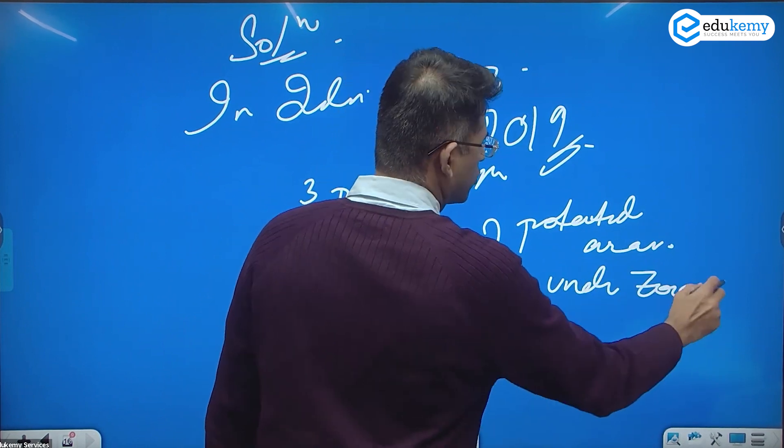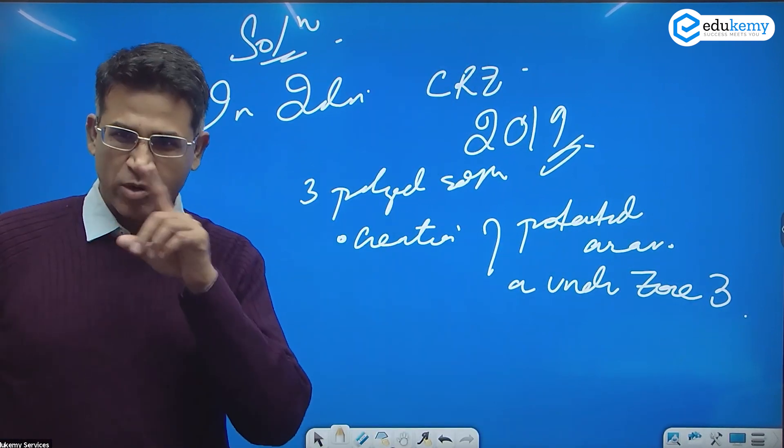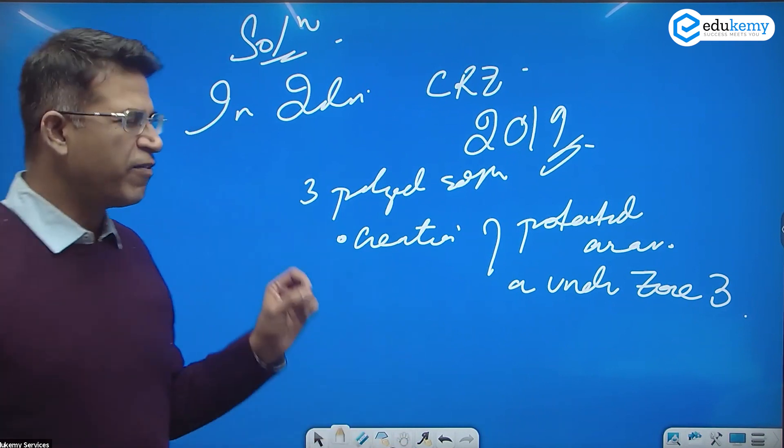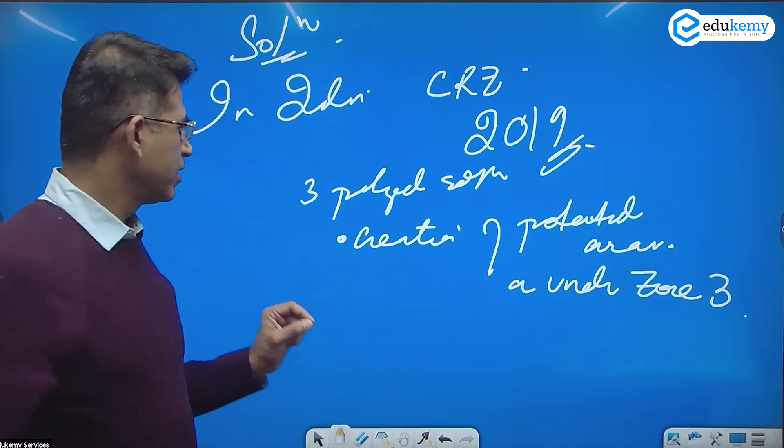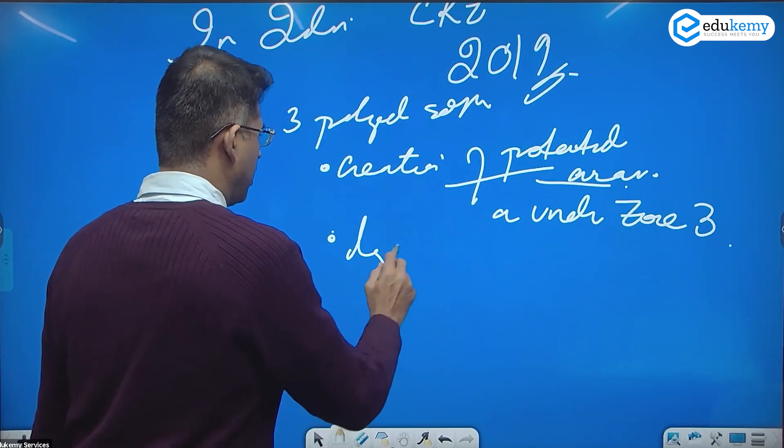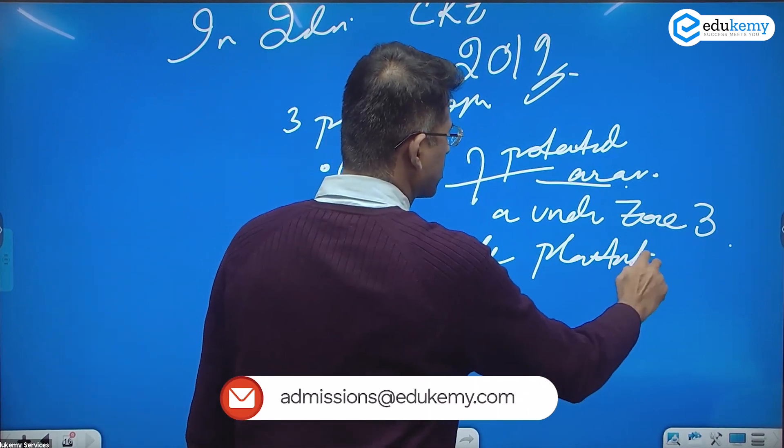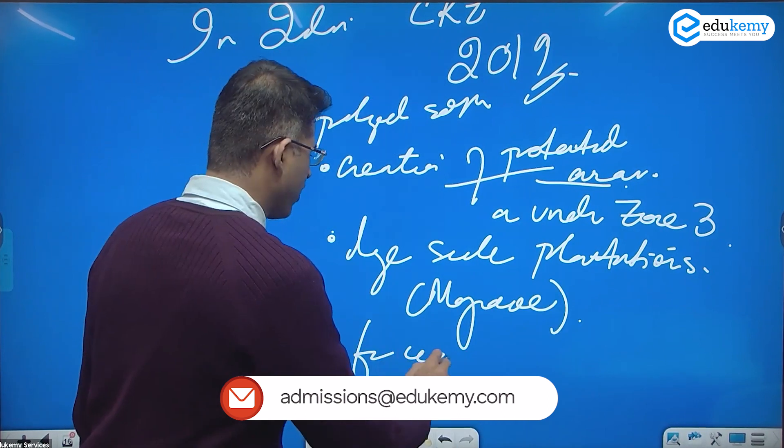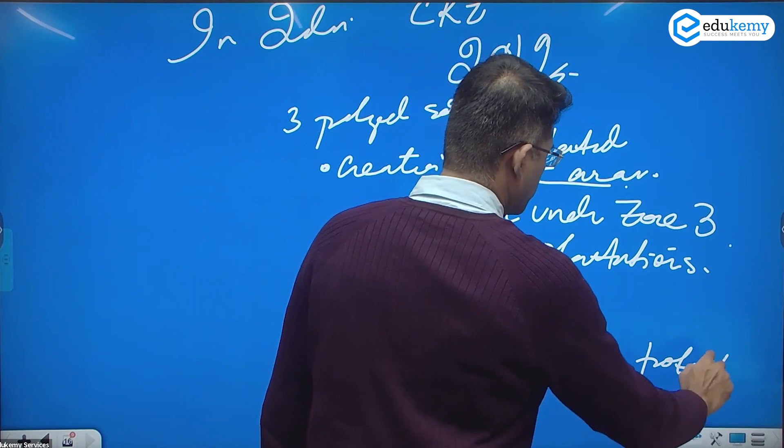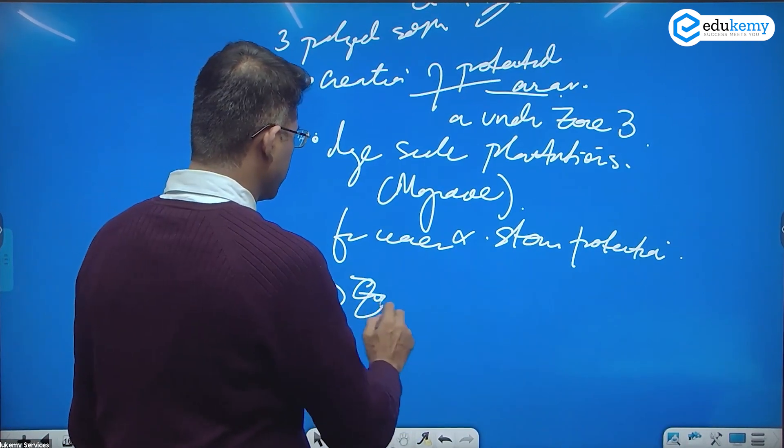As under zone three. If you remember zone one, two, three. Zone three comes beyond one and two, which means limited agriculture allowed. That is one. For the areas, the second is large scale coastal plantations with mangroves for waves and for storm protection.